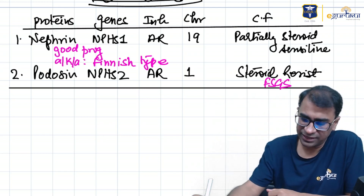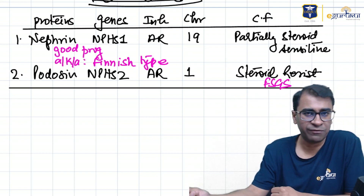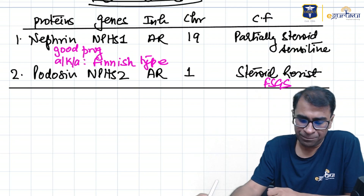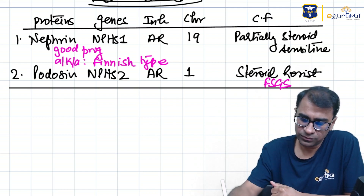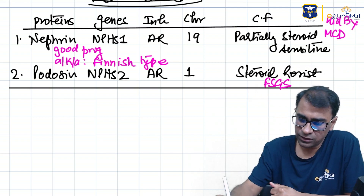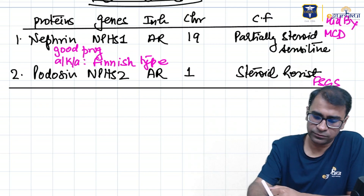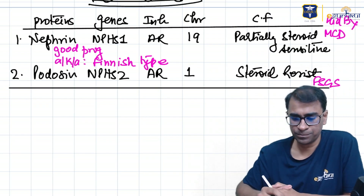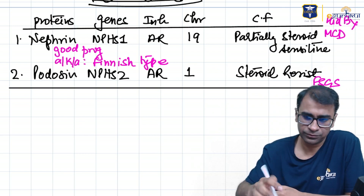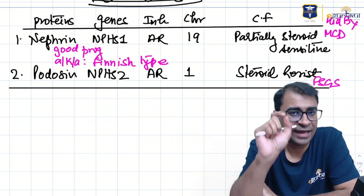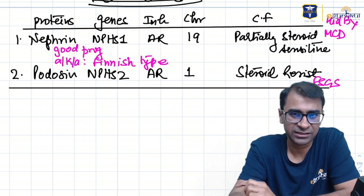On kidney biopsy, the podocin type (steroid-resistant, NPHS2) shows FSGS — focal segmental glomerulosclerosis. The nephrin type (NPHS1, partially steroid sensitive, Finnish type) often shows MCD — minimal change disease. This covers congenital nephrotic syndrome and Alport's syndrome under the heading of hereditary nephritis.